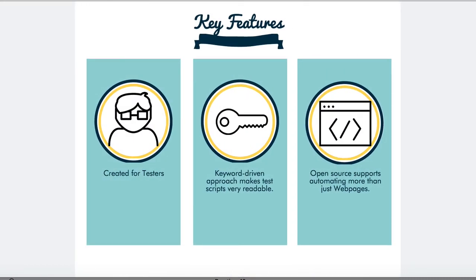The key features of the Robot Framework, if you're looking for a framework, are that it was really created for testers by testers — and that's a big difference from other tools out there. It's keyword-driven based, so if you're used to vendor-based tools like UFT or QTP, many testers would already be familiar with this type of approach. It's also open source, so you don't have to pay for it, and it does more than web-based automation. So if you're looking for a test automation framework, I highly recommend you check out the Robot Framework.